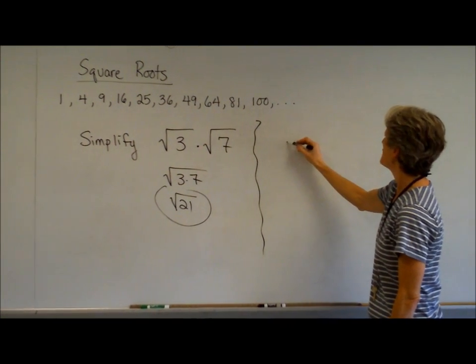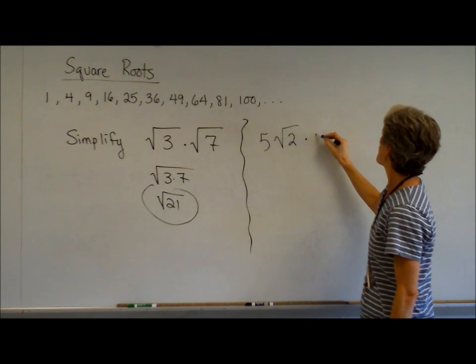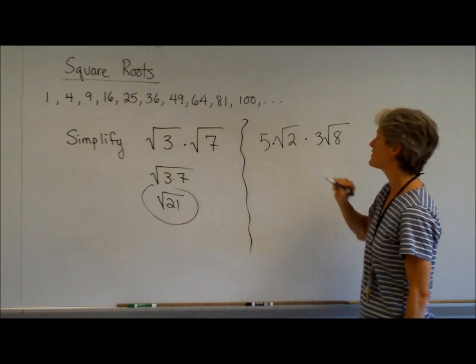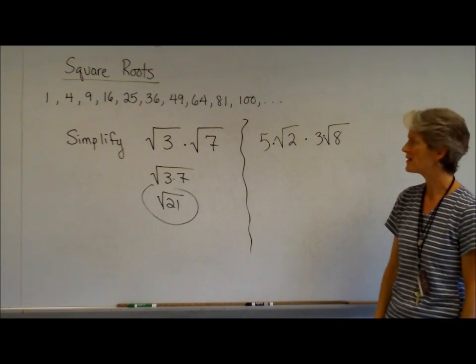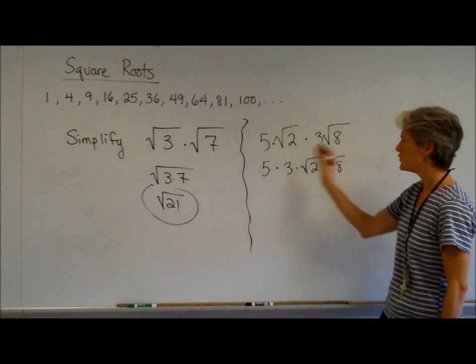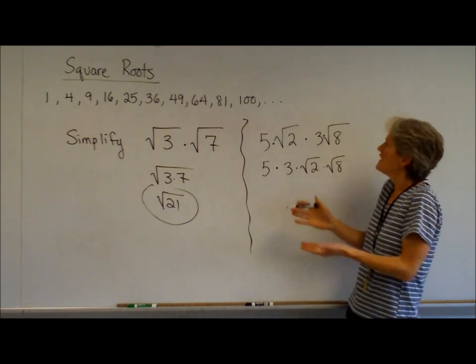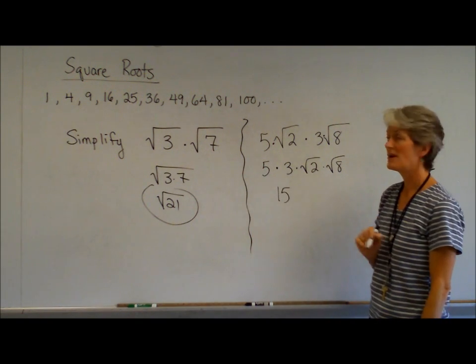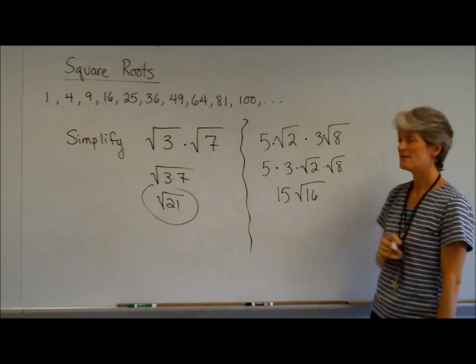How about if I have 5 times the square root of 2 times 3 times the square root of 8? Well really, isn't that just 5 times 3 times the square root of 2 times the square root of 8? That's the commutative property. The 5 multiplies nicely with the 3 to give me 15. Square root of 2 multiplies nicely with that square root of 8 to give me the square root of 16.